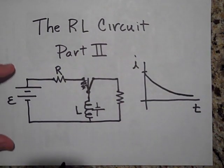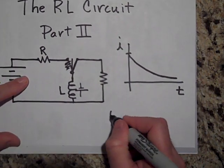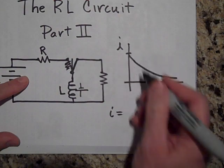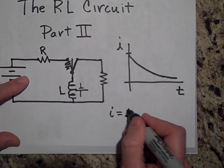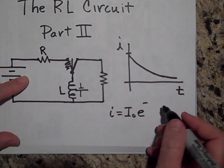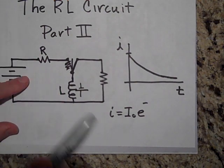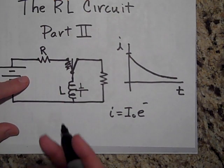And if it looks like that, then we might expect a decay function that looks something like I equals some initial current I naught times e to the negative some constant times t. As you might guess, it's probably the same constant as the other one. If you remember how RC circuits worked, it was the same constant.